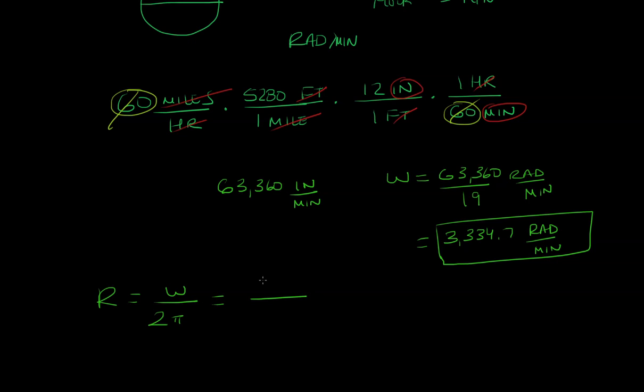And so we have angular speed as 3,334.7 over 2 pi. And this is going to be in terms of revolutions per minute. So dividing that, we end up with 531 revolutions per minute. And that's our final answer.